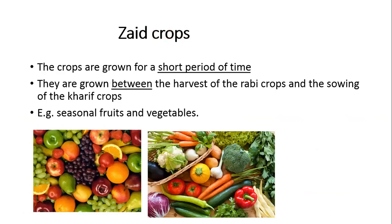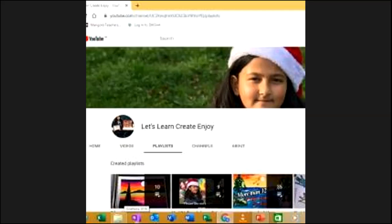Next is Zaid crop. These crops are grown for a short period of time. They are grown between the harvest of Rabi crops and the sowing of Kharif crops. Students, I hope you liked this video — till then, bye bye.